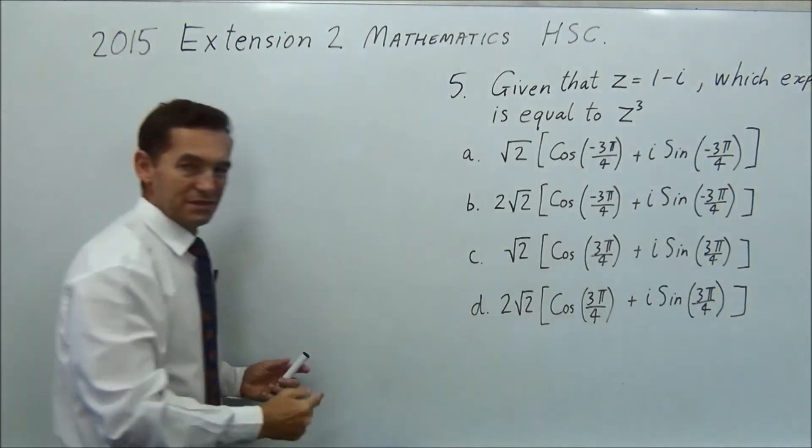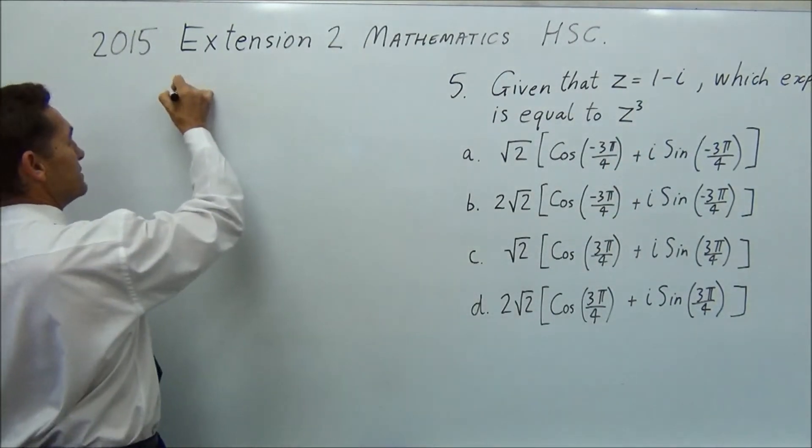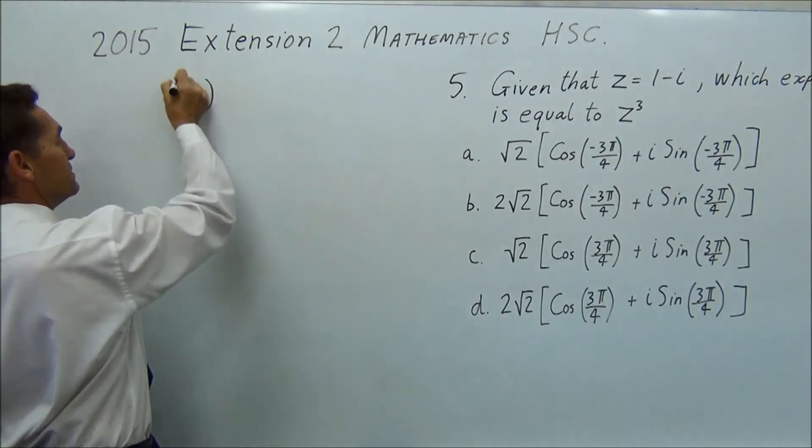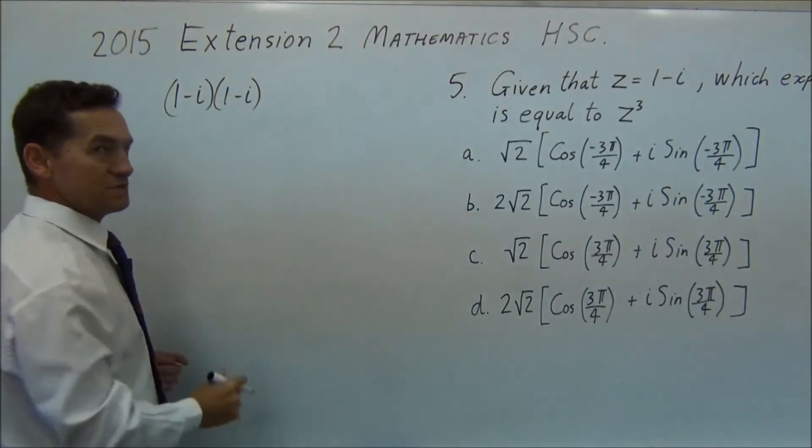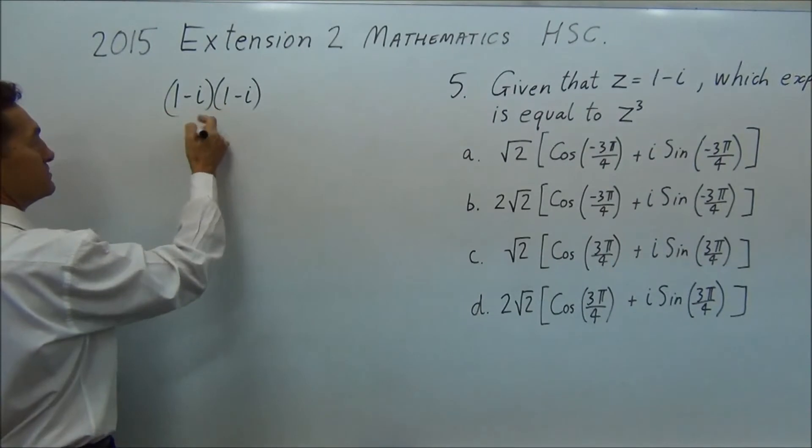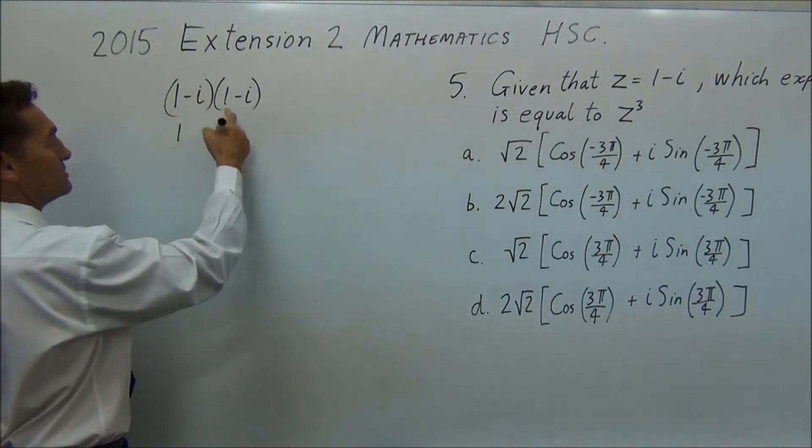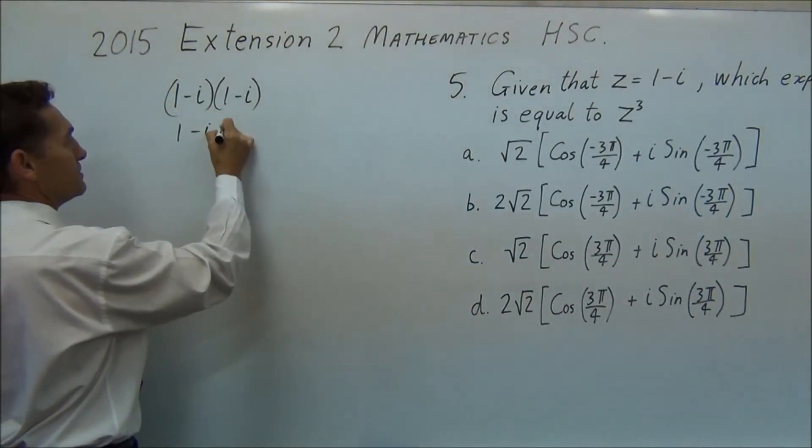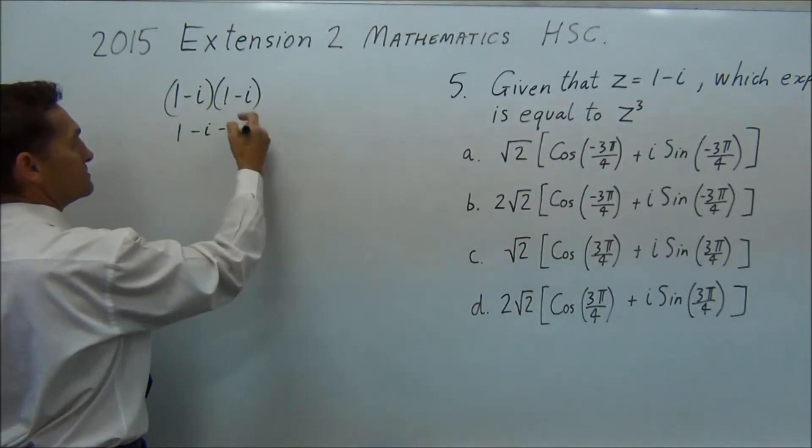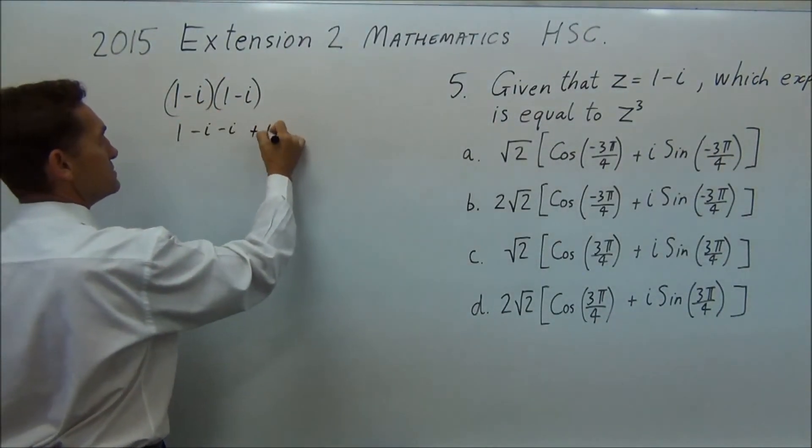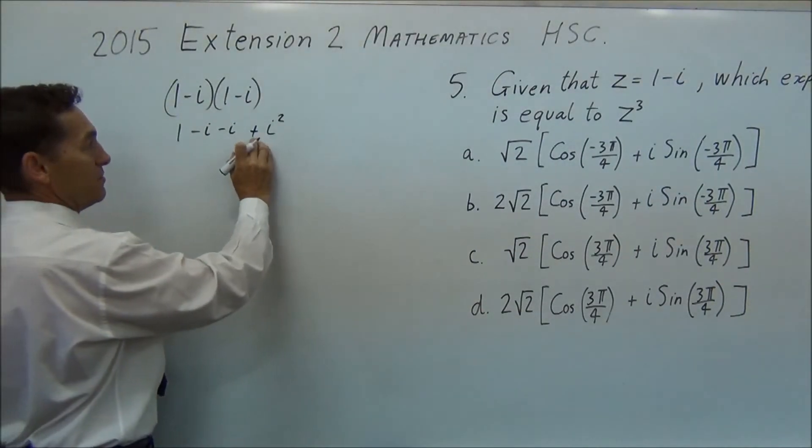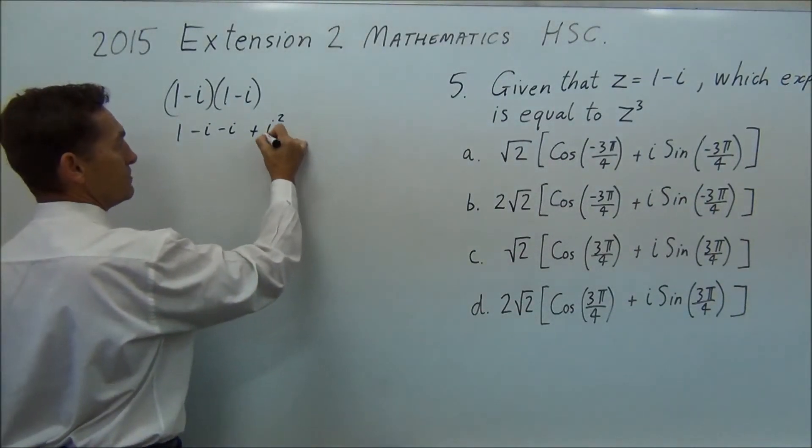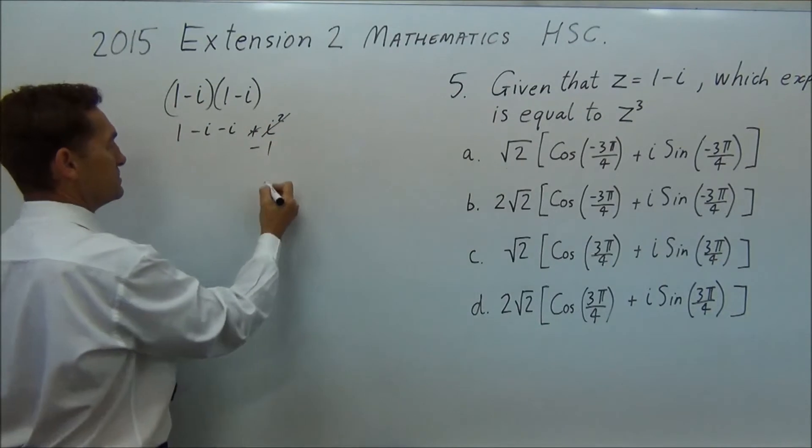To start with, let's cube it. So you've got one minus i, we'll square it first, multiply by one minus i. Pretty simple. One times one, one. One times minus i, minus i, another one. Minus times a minus is a plus. i times i is i squared.